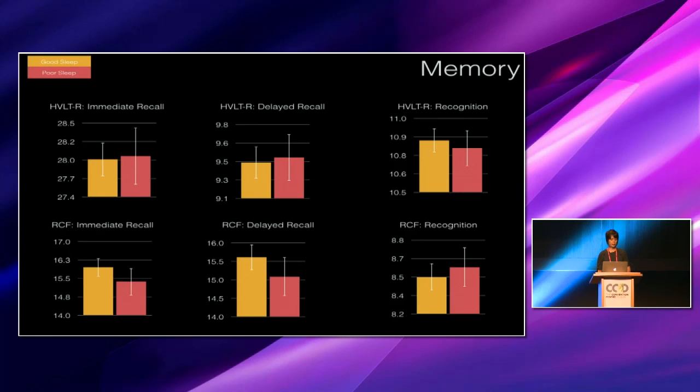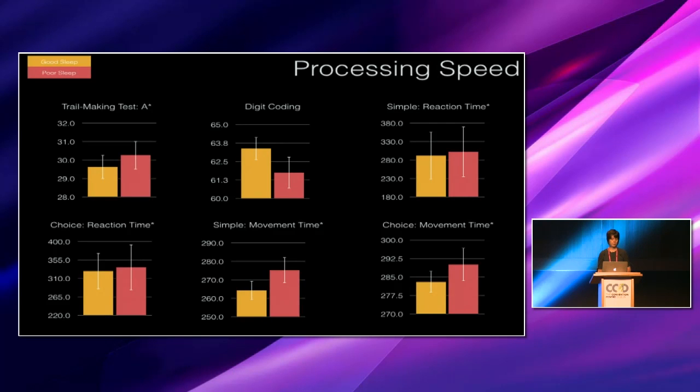Similarly, for memory, we didn't find any significant differences between groups in measures covering verbal and visual memory, and immediate recall, delayed recall, and recognition tasks. And then finally, in pen and paper and computerized tests of processing speed, again, we didn't find any significant differences between groups.